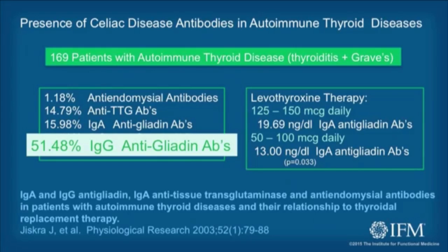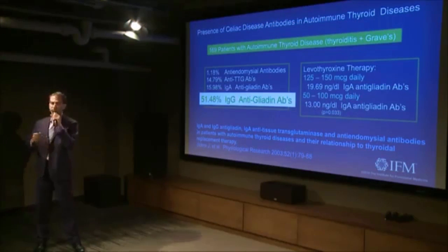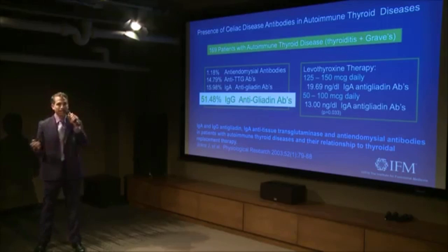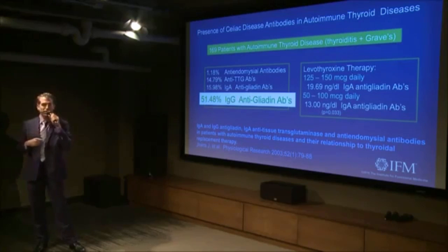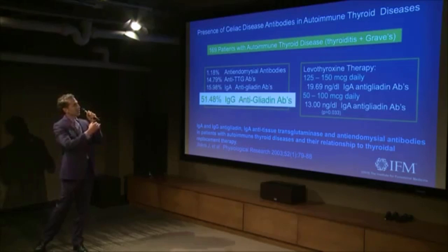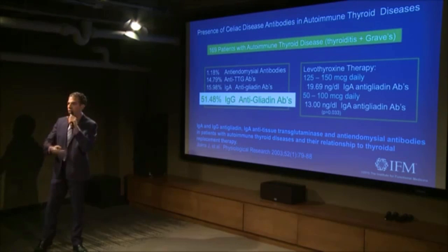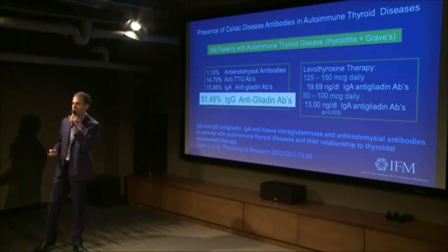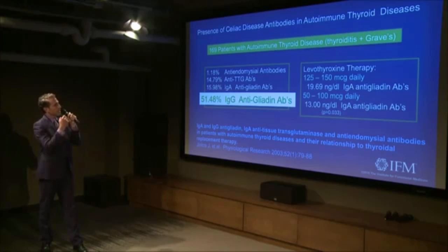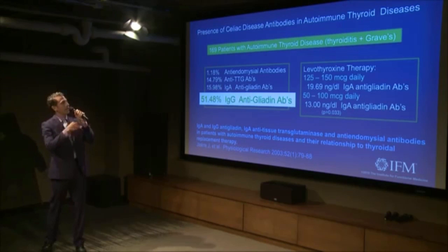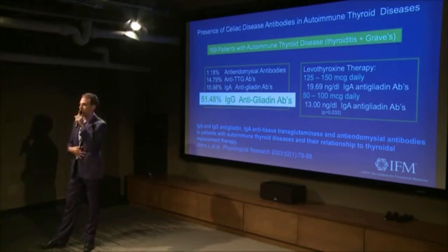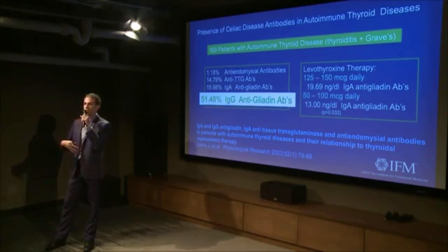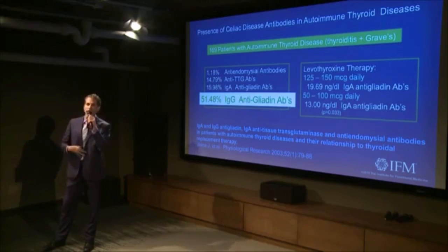I'm going to show a diagram that will explain the connection between tissue transglutaminase and the thyroid. What they also found was that if they looked at how much thyroid replacement hormone the patient was taking, the levels were much higher for patients with higher levels of IgA antibodies — suggesting that something is happening in the gut that's not allowing for good absorption of the thyroid hormone.